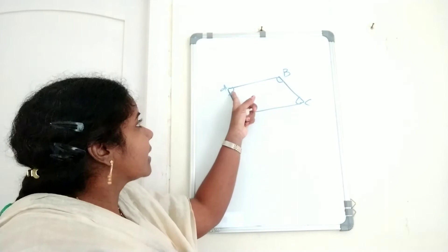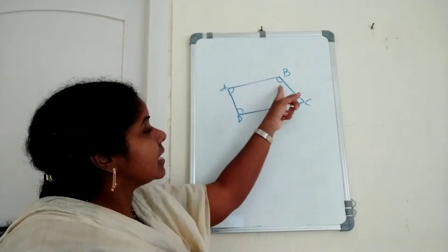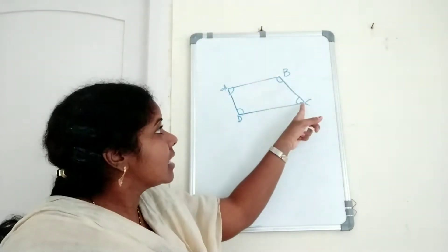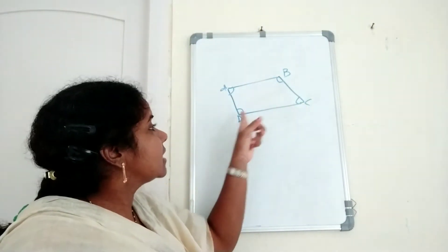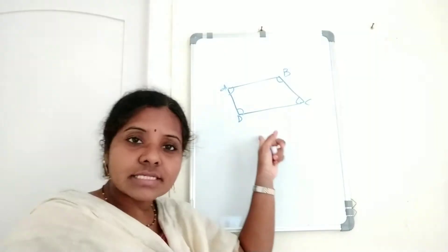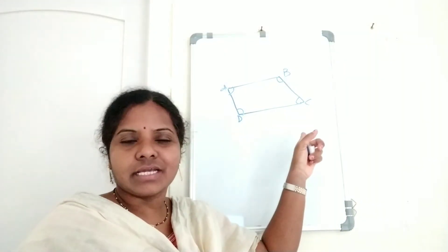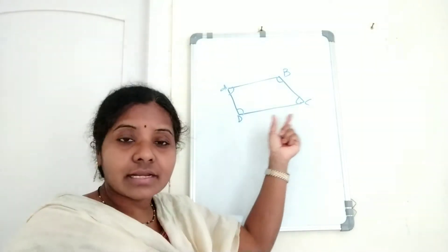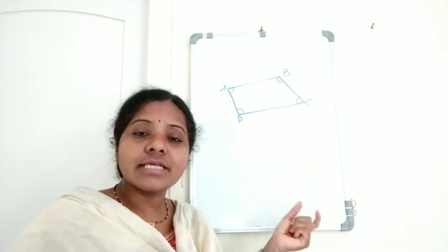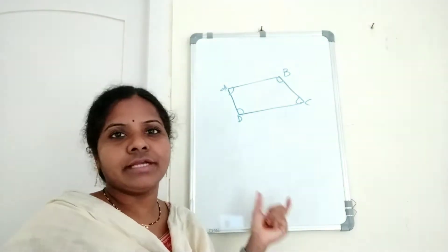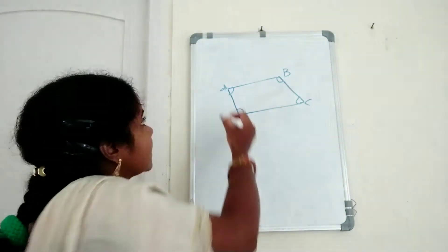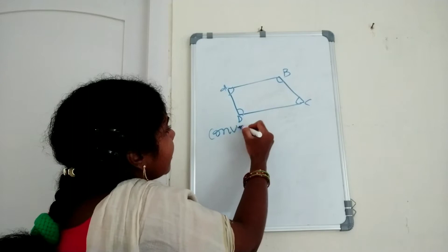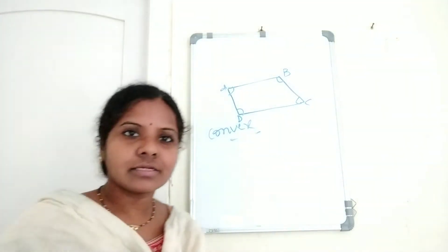Here, angle A is less than 180 degrees, angle B is also less than 180 degrees, and similarly angle C and angle D are also less than 180 degrees. So when each interior angle is less than 180 degrees, that quadrilateral is said to be a convex quadrilateral.